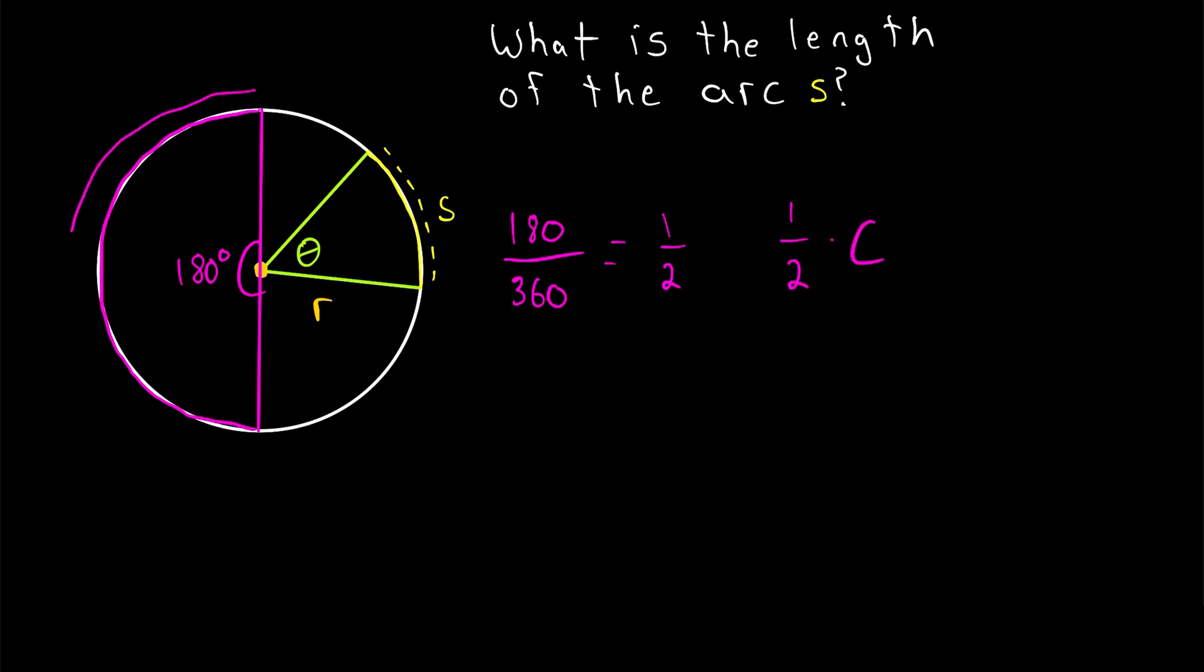Because the angle goes halfway around the entire circumference of the circle. And if we wanted to write this in terms of the radius length of the circle, the circumference is equal to 2 times pi times the radius. So this is our arc length for the particular case where the central angle is 180 degrees.